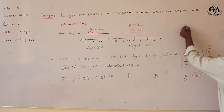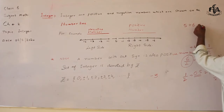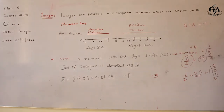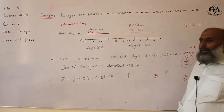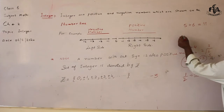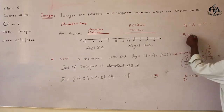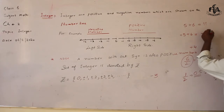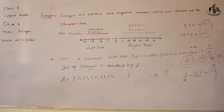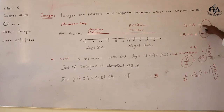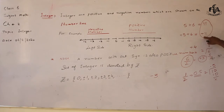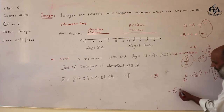If a question comes: five plus six, you can easily say the answer is eleven, because both are positive numbers. If I write it as plus five plus six, then the answer is plus eleven. There is no difference between these two statements, because a number without a sign is also a positive number — it is still a positive number.